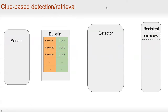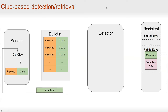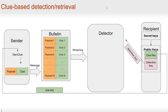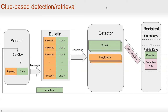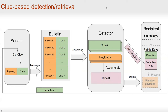Our solution is clue-based detection and retrieval. The recipient holds some secret keys and uses them to generate public keys containing a clue key and a detection key. The sender uses the clue key to generate a clue and puts it together with the payload onto the bulletin board. The recipient then sends the detection key to the detector, which uses the clues, payloads, and detection keys to accumulate some digest and send it back to the recipient. The recipient then processes this digest to obtain the plaintext payloads.